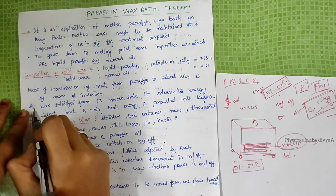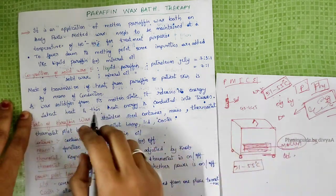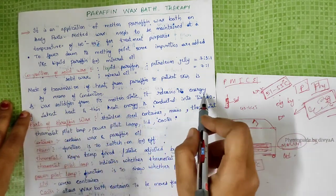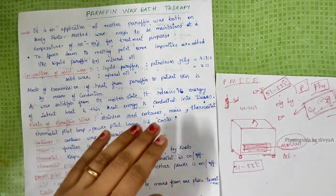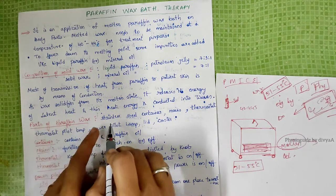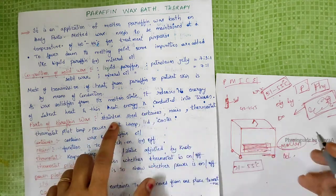As wax solidifies from its molten liquid stage, it releases energy of latent heat, and this heat energy is conducted into tissues.